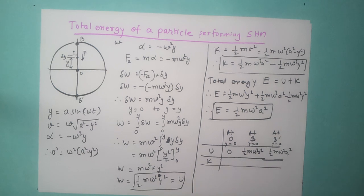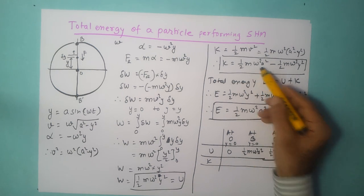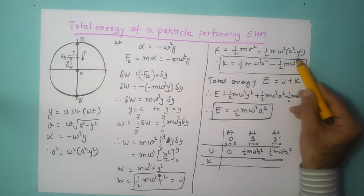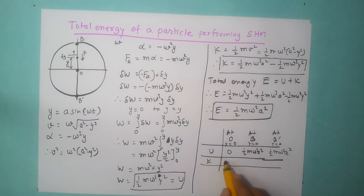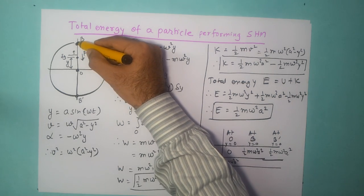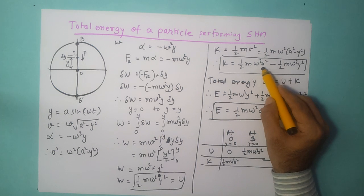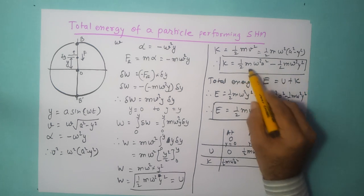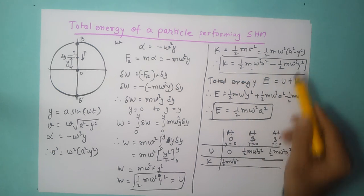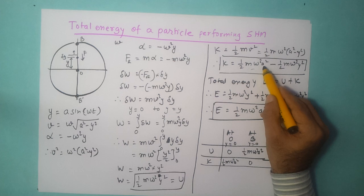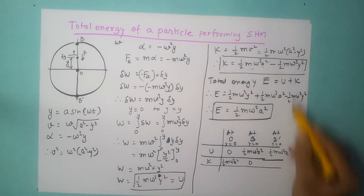For kinetic energy: at location O, y is zero so the y squared term becomes zero, leaving half m omega squared a squared. At location B, y equals a, so the kinetic energy is half m omega squared a squared minus half m omega squared a squared, which equals zero. The same happens at B dash: y equals a, so kinetic energy comes out to be zero.